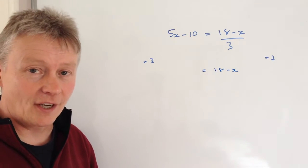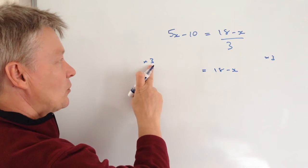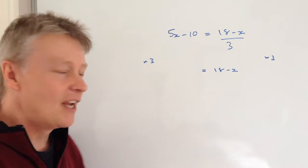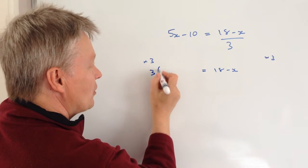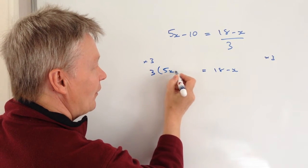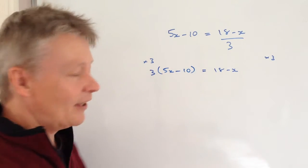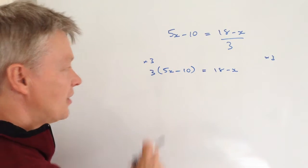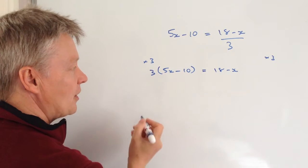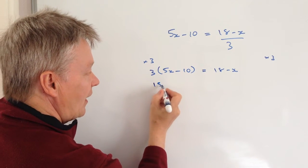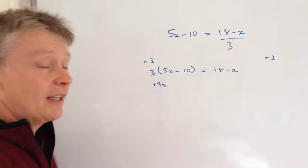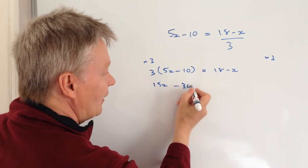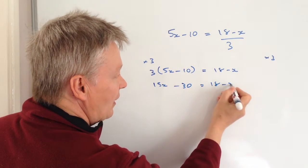On the left-hand side you need to remember this 3 multiplies both of these terms, and sometimes it's just a little easier to remember to write 3 times 5x minus 10, and that will kind of remind you then that you're multiplying both terms out. So let's just do that, we've got 3 times 5x is 15x, and then 3 times minus 10 well that's going to be minus 30, and that equals 18 minus x.